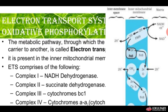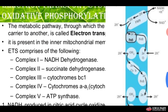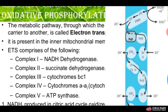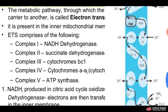The electron transport system is comprised of five complexes. Complex 1 is NADH dehydrogenase, Complex 2 is succinate dehydrogenase, Complex 3 is cytochrome BC1, Complex 4 is cytochrome AA3, and Complex 5 is made up of ATP synthase. These are the complexes present in the electron transport system.